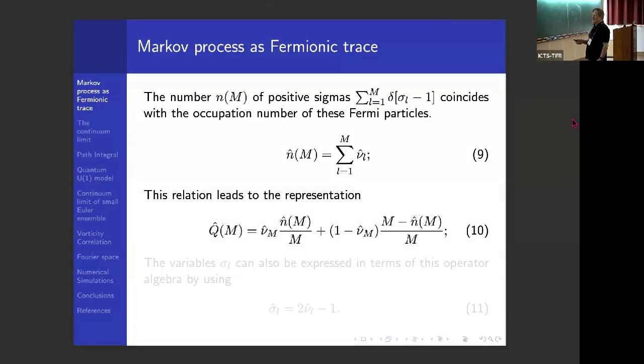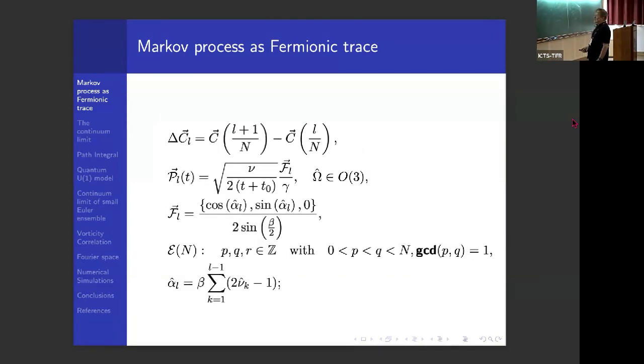So, number of positive sigmas coincides with the occupation number of these fermion particles. And that relation leads to representation of the Markov matrix as an operator. This is nu M, occupation, total occupation number at state M, and this is NM. And NM is total sum of all numbers from 1 to M. So, that's the operator representation which would reproduce the same Markov chain. To my surprise, I haven't seen in the literature operator representation of Markov chain, but that's rather obvious for a physicist. So, sigmas, of course, can be replaced as 2 nu minus 1. But that has far-reaching consequences.